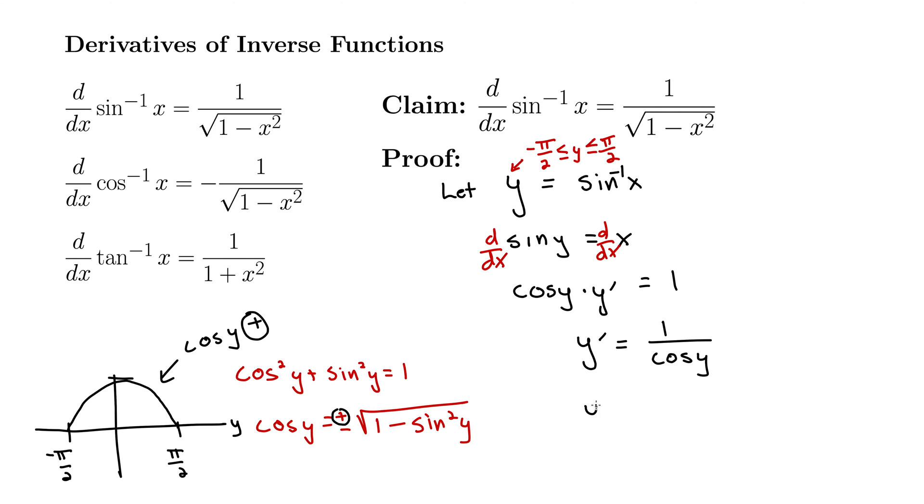So back to our proof. We have y prime equals, we decided that cos y was the square root of 1 minus sine squared y. But what is sine y? Recall, up here, we decided that sine y was actually x. We're letting x be sine y. So then we can plug x in down here. Every time we see sine y, we replace it with x. That gives us our final result of 1 over the square root of 1 minus x squared. Which completes the proof.